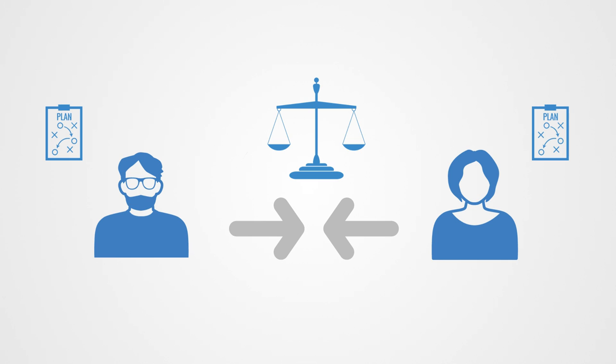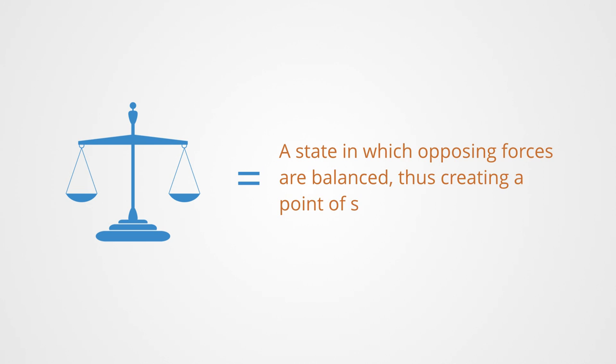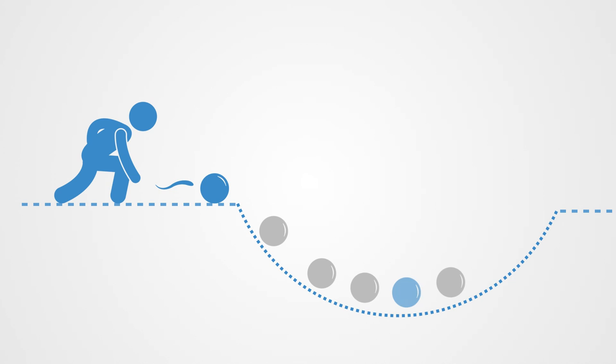This stable outcome is what we call an equilibrium. Equilibrium in the general sense means a state in which opposing forces are balanced, thus creating a point of stability and stasis. When we see a ball at the bottom of a bowl, it is in a state of equilibrium because if we put it anywhere else in the bowl, the force of gravity would act on it to pull it back to this static point.